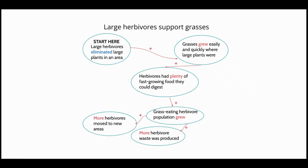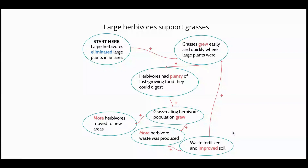The increased herbivore population has two effects. First, they have to move to new areas to find new food sources. Second, they produce a lot of waste. Herbivore waste is a good fertilizer and improves the soil over time, which causes grasses to grow more quickly and in more places, allowing for a greater herbivore population.